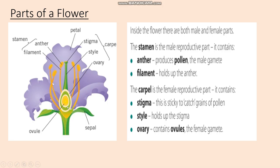So ovules are the eggs. You've then got the style which supports the stigma. If you remember that the stigma is sticky — sticky stigma — it'll help you to remember what the stigma does. Its job is actually to catch grains of pollen, and we'll find out why that's necessary in a moment.